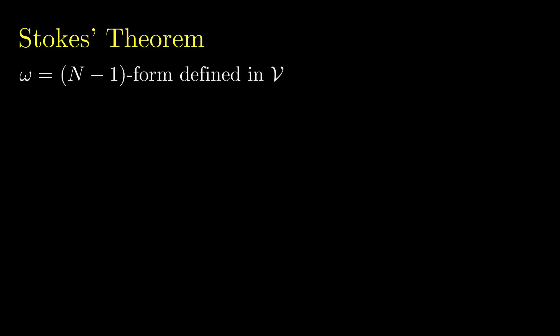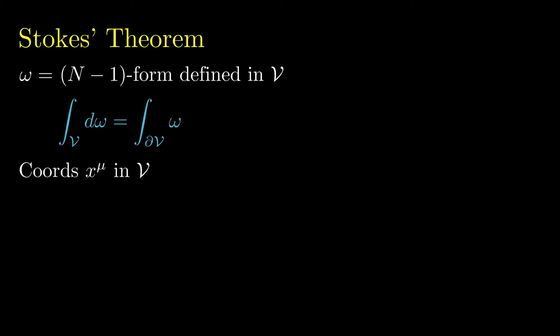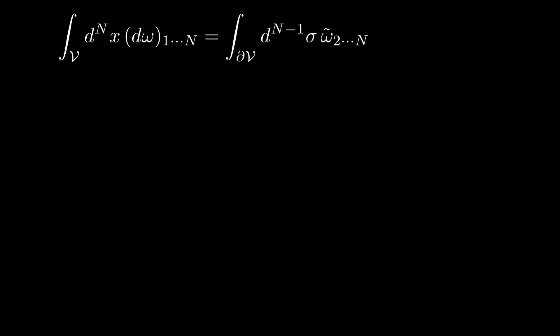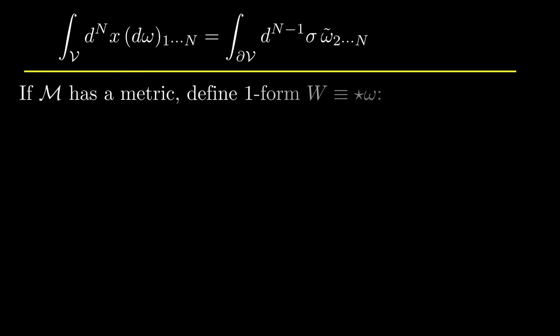Stokes' theorem says that for any n-minus-1 form omega, the integral over some volume V of d-omega equals the integral over the boundary of V of omega. In terms of positively oriented coordinates x on the manifold and positively oriented coordinates sigma on the boundary, Stokes' theorem can be written in this way. Now, if the manifold has a metric, we can rewrite Stokes' theorem in terms of the one-form that's dual to omega — we'll call this one-form capital W.